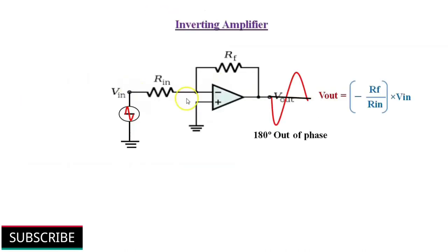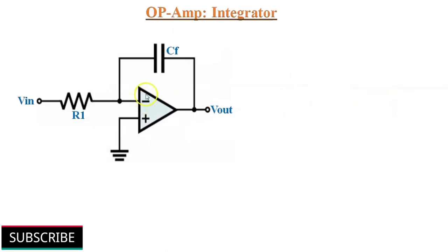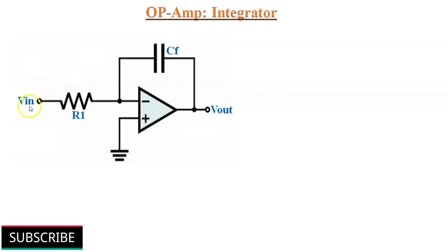In a simple Op-Amp, the output is proportional to the input signal amplitude. The Integrator Op-Amp produces an output that is both proportional to the amplitude and duration of the input signal. We can simply say that the output of an Integrator is proportional to the area of the input waveform over a period of time.